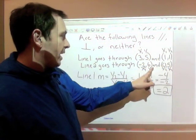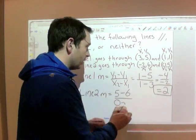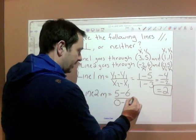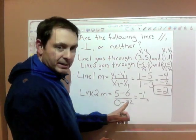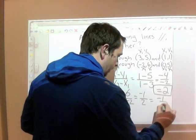My y two is five, y one is six, x two is zero, x one is negative two. Now let's calculate this. Five minus six is negative one, zero minus a minus is plus, so zero plus two is two, so it's negative one half.